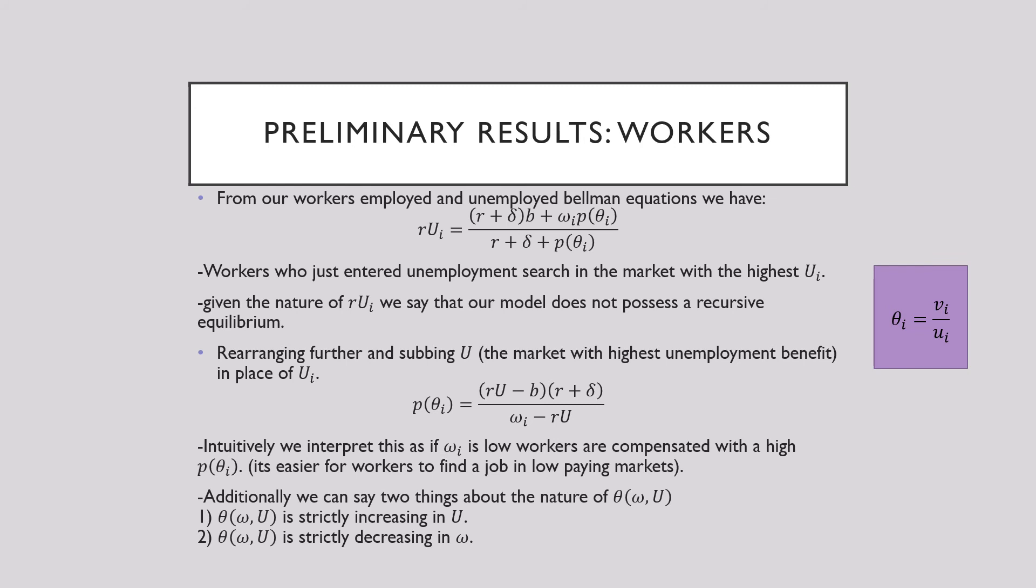Intuitively we interpret this as, if omega_i is low for workers, they are compensated with a higher probability of finding a job, p(theta_i). So this just means that it's easier for workers to find work in low paying markets. That's all it means. Additionally, we can say two things about the nature of theta, omega, and U. We say that theta(omega, U) is strictly increasing in U_i just from our expression over here, and we say that theta(omega) is strictly decreasing in omega or our wage there.